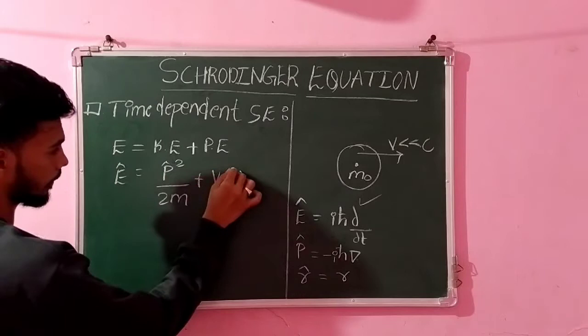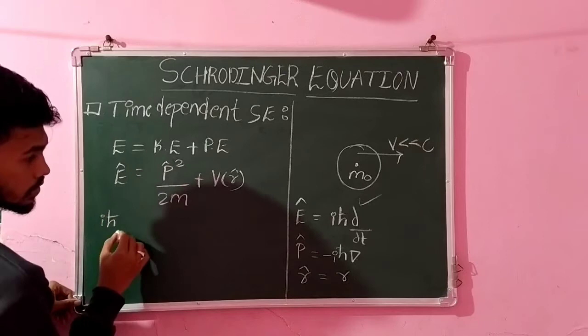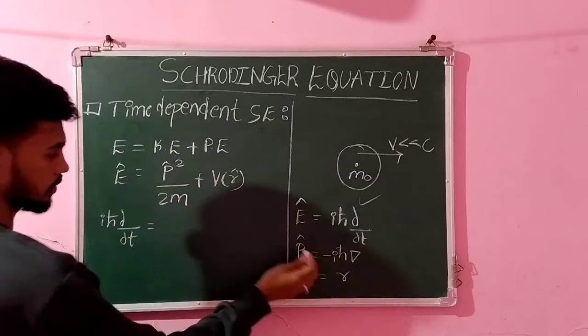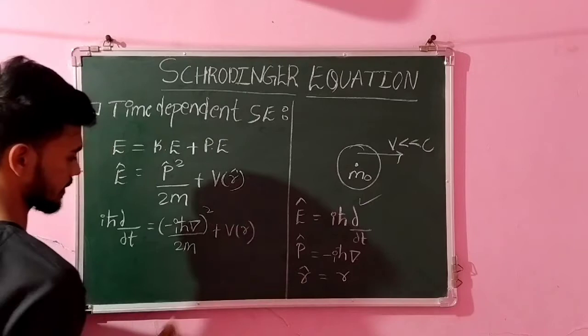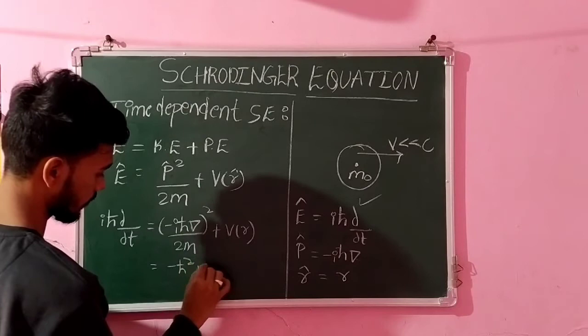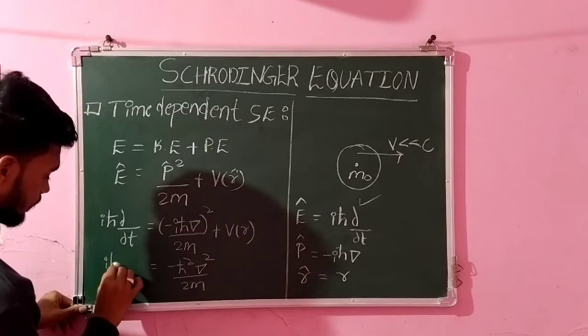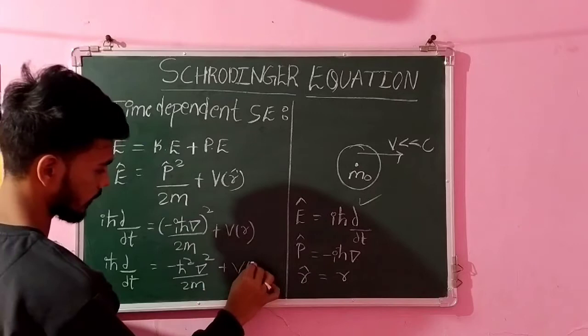So just substitute all these operators in this one. Consider these operators and substitute them. That is iℏ∂/∂T, which equals to momentum operator -iℏ∇ by 2M. It's a square, so just square it. Plus V of R. It remains as it is. Then it becomes -ℏ²∇² by 2M plus V of R.